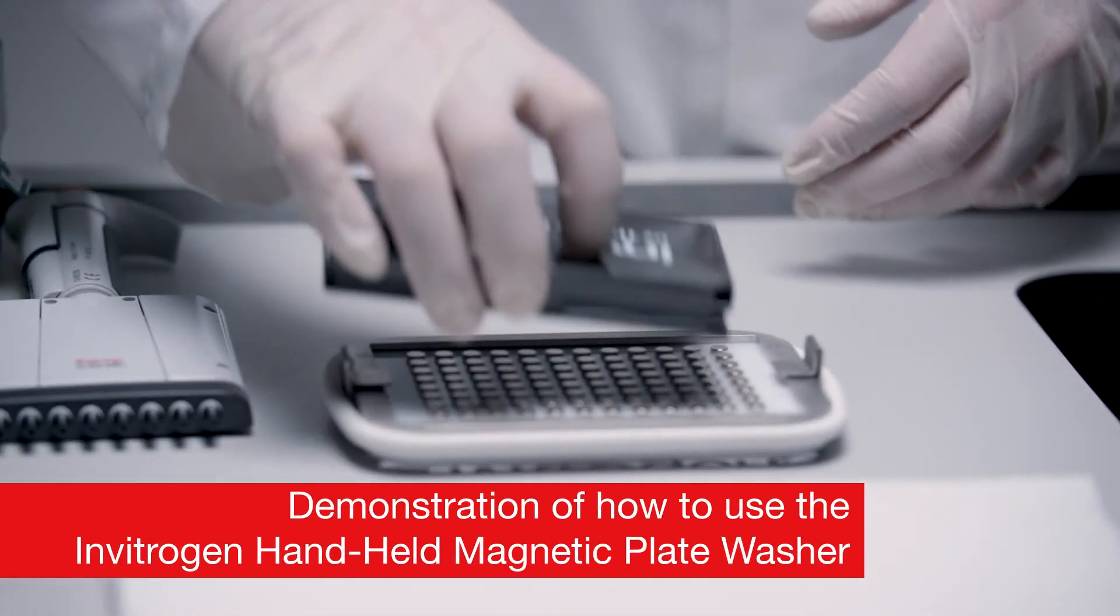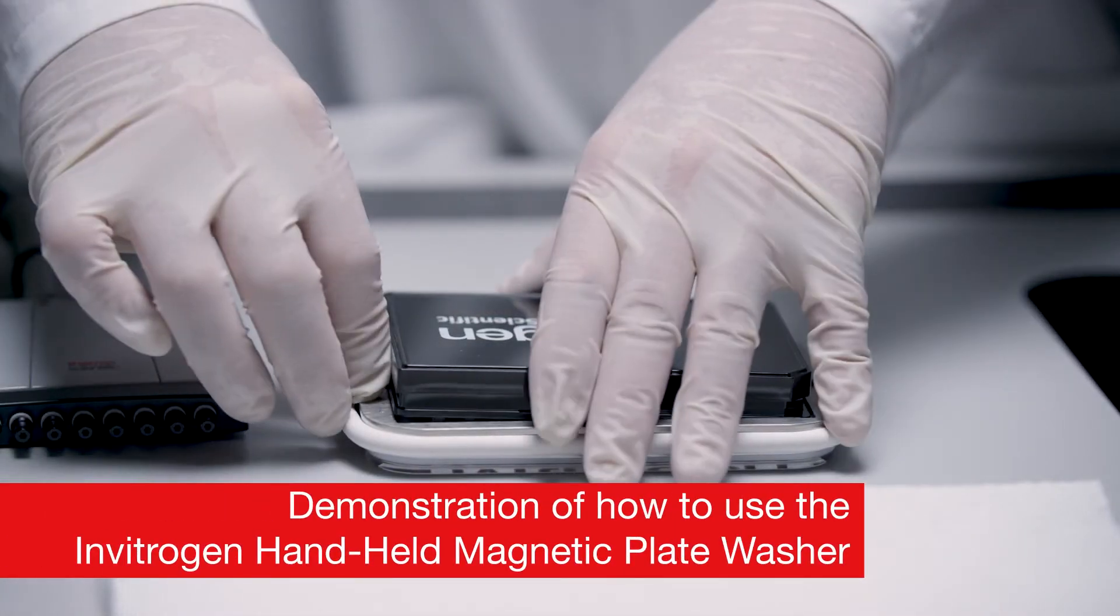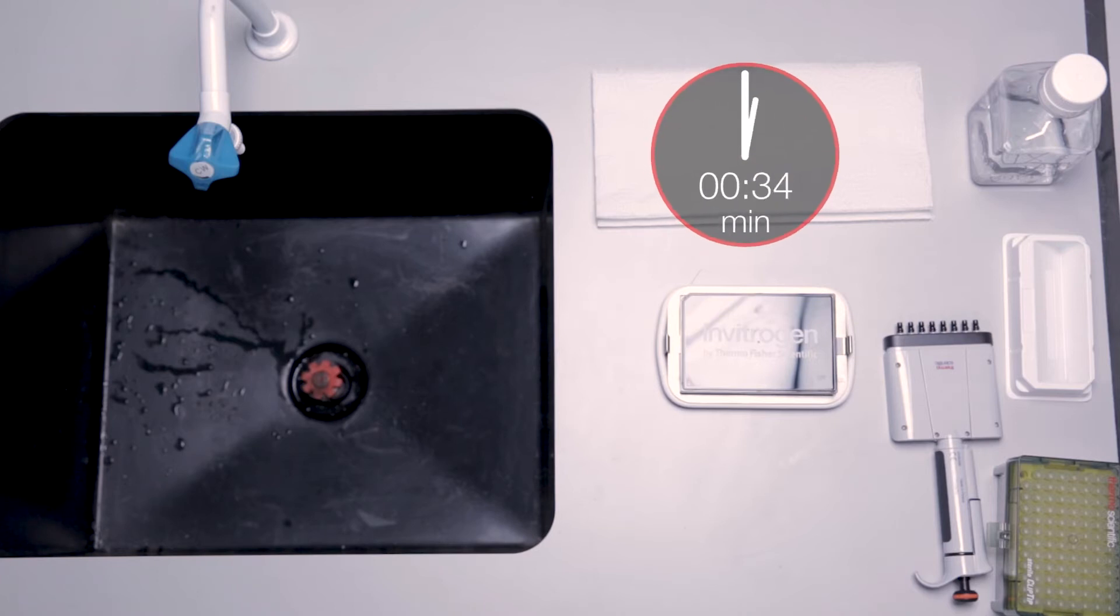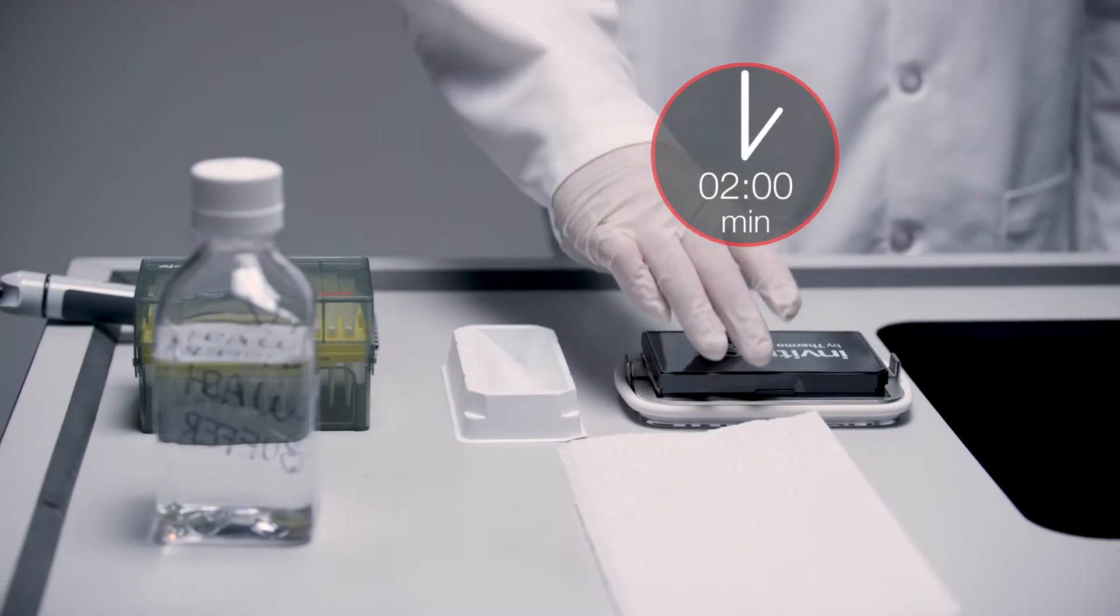Securely insert the 96-well flat bottom plate into the handheld magnetic plate washer. Ensure that the plate is held in place by the two tabs and wait two minutes to allow the beads to settle on the bottom of each well.